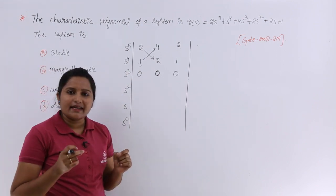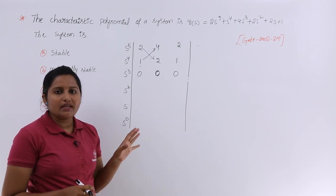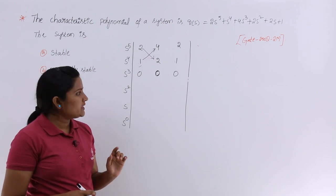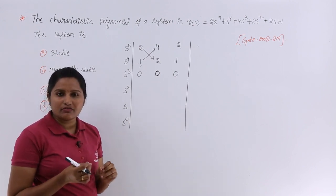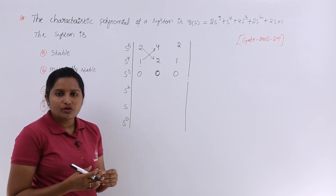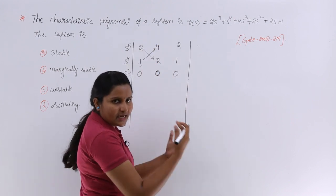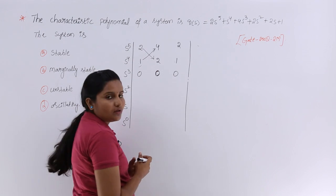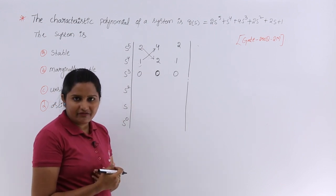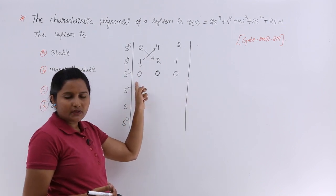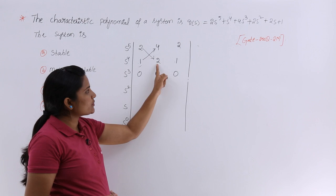This is the second special case of the Routh array — when an entire row equals zero. We already discussed special cases of the Routh array; refer to those videos for the full procedure. Whenever a total row of your Routh array is zero, to continue you need to form an auxiliary equation using the row just above the zero row. So we write: A(s) = s^4 + 2s^2 + 1.